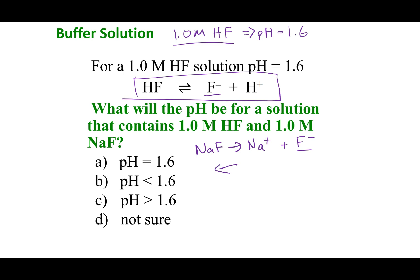If I shift my reaction to the left, I'm taking my products and making them reactants. That means my H+ concentration is going to go down. If H+ goes down, that means my pH is going to go up. So I expect that I'm going to get a pH that is greater than 1.6.